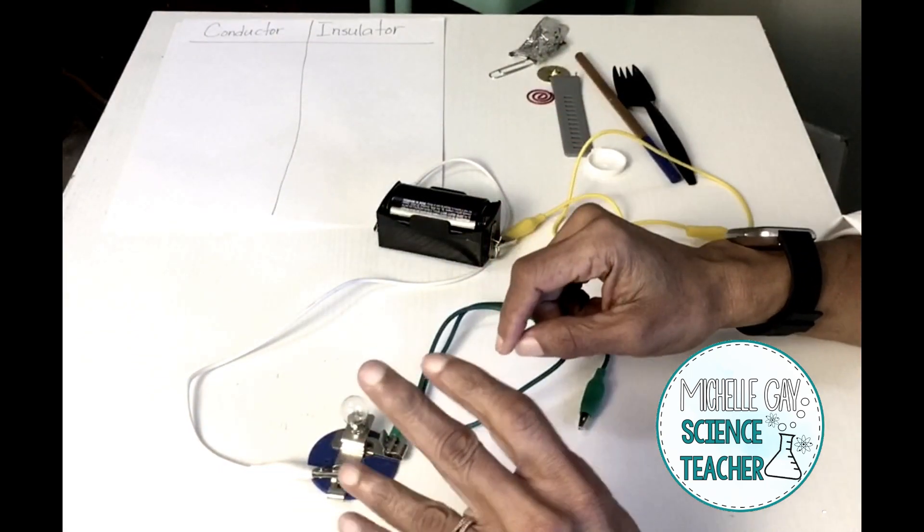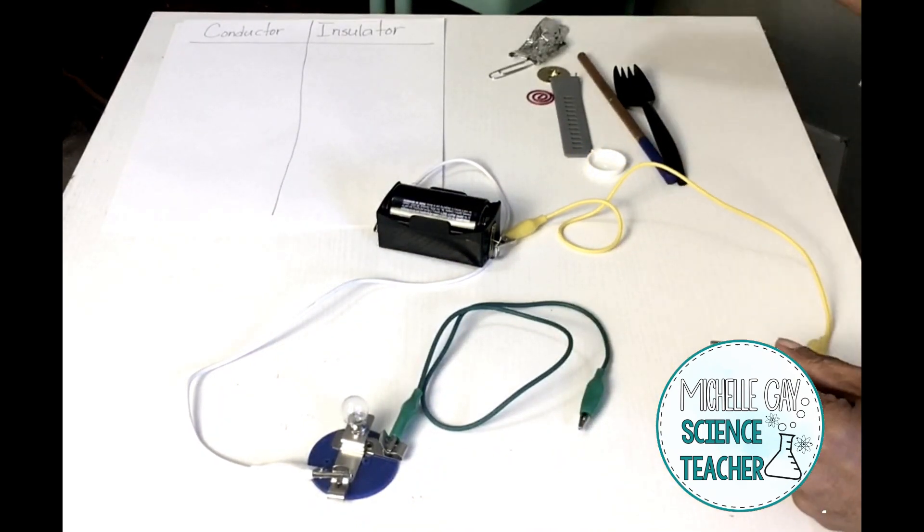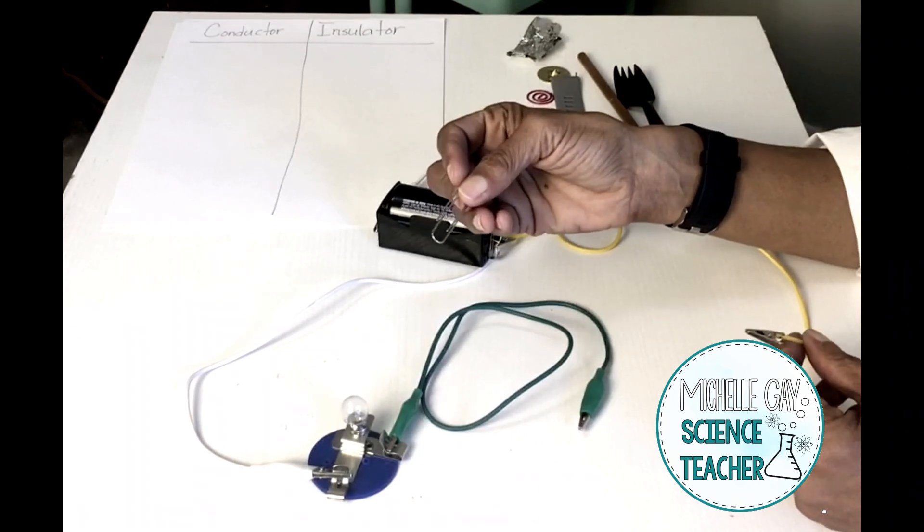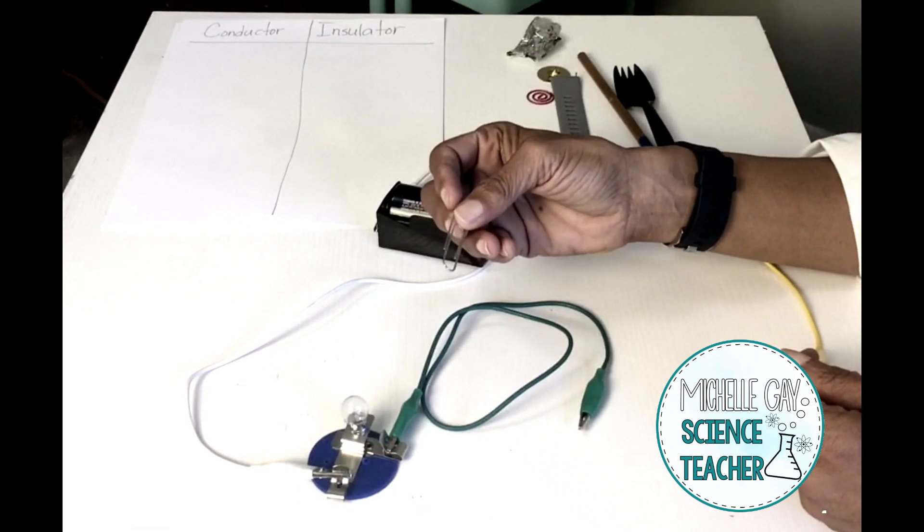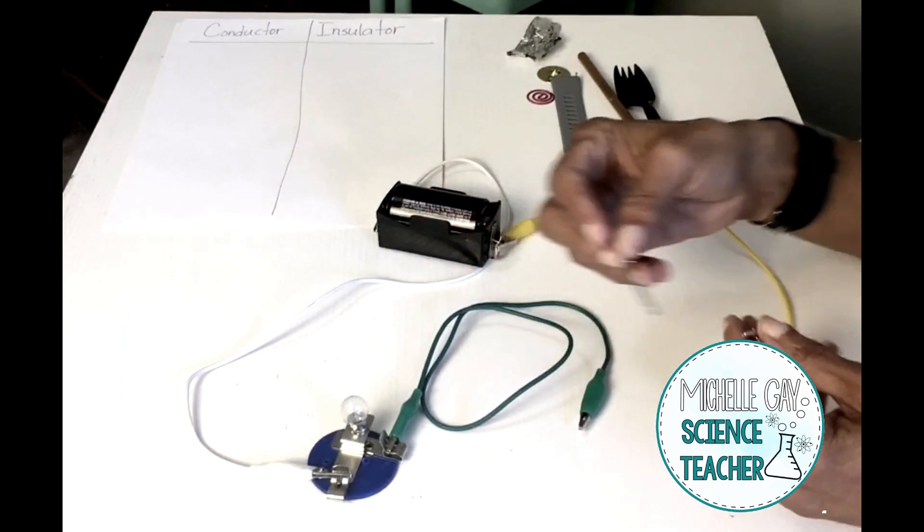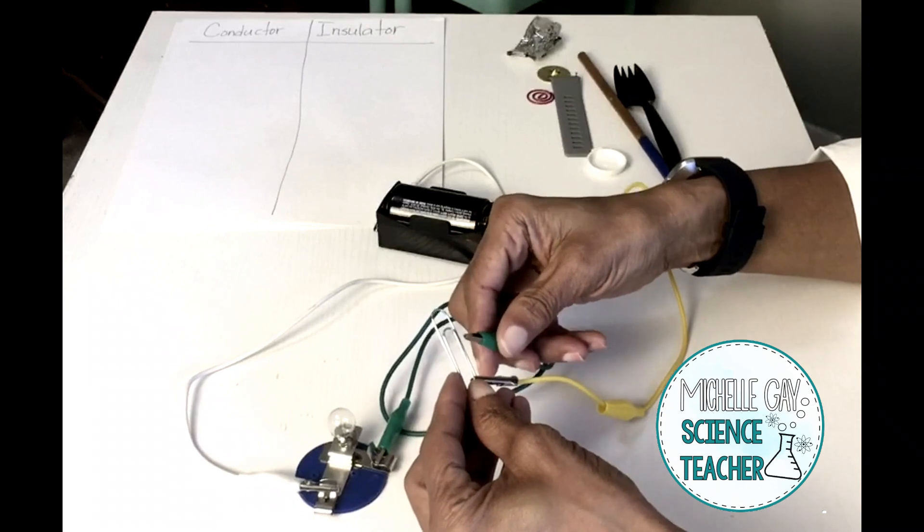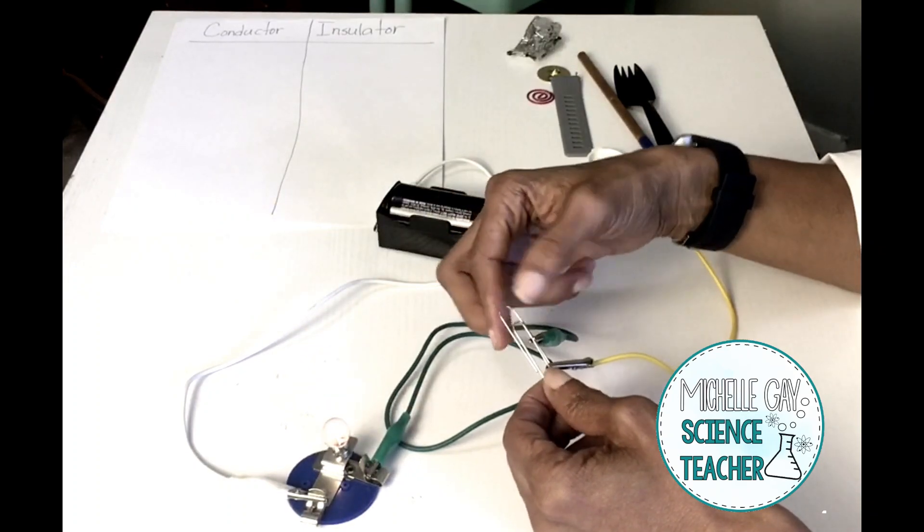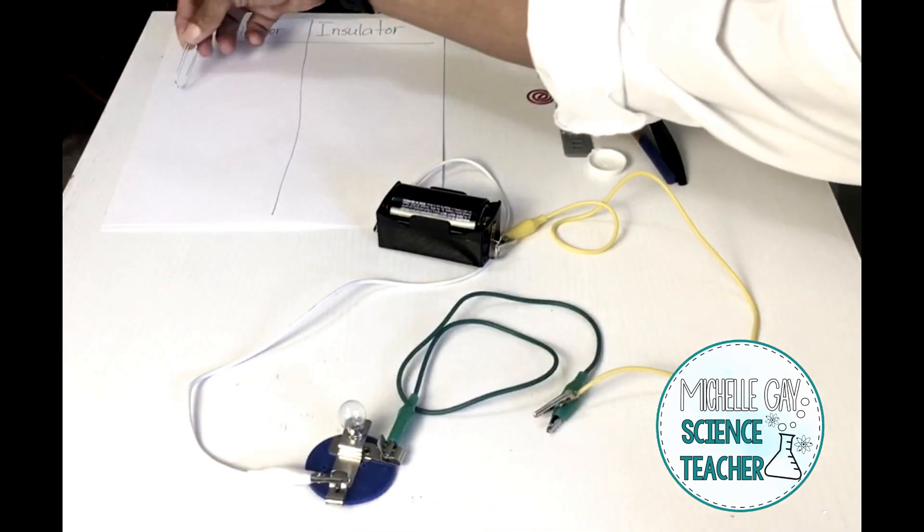We're going to test our materials to see if they are conductors or insulators. First, we're going to test the paper clip. Now remember, if it's a conductor, the light bulb will come on because the current electricity or the current charge will continue to flow. Let's test it out. It is a conductor because the light bulb came on. So we're going to place this on our chart on the conductor side.